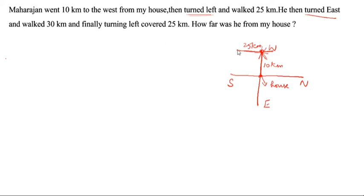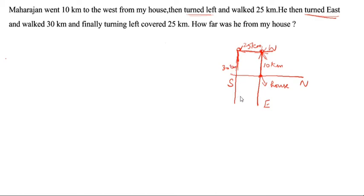Turned east — the question doesn't say turned left or right, it says turned east directly. So turned east means you come here towards the east side. He walked 30 km towards the east — so 30 km this way.